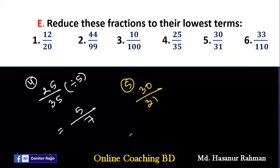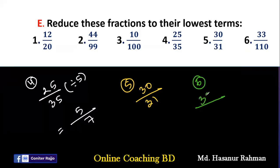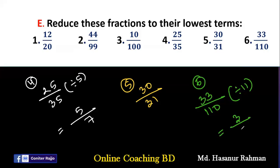Now the last one, number 6: 33/110. We divide by 11: 33÷11=3 and 110÷11=10. So 3/10 is the lowest term of 33/110.